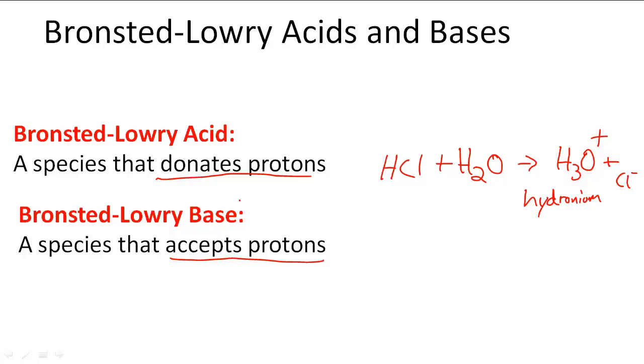So Bronsted-Lowry acids and bases always come in conjugate pairs. They always come in pairs, so we call them conjugate acid-base pairs.